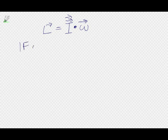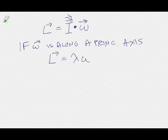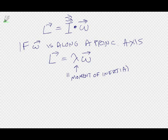But if omega is along a principal axis, then we also have L equal to lambda times omega, where lambda is just a scalar, and this is what you would have called a moment of inertia. Back in the old days, when you were always rotating around a principal axis, this lambda would be called a moment of inertia.